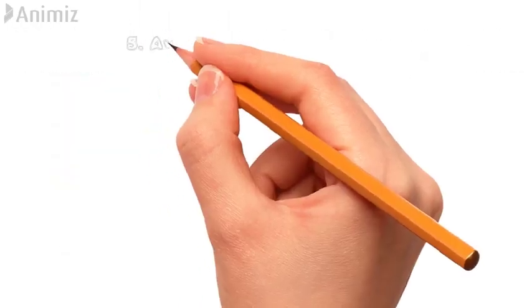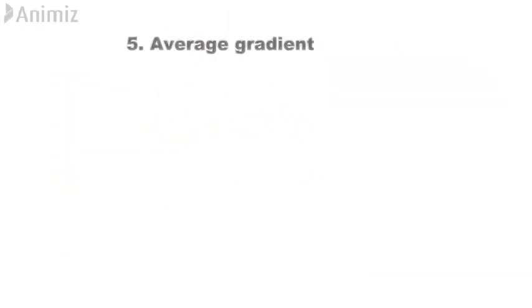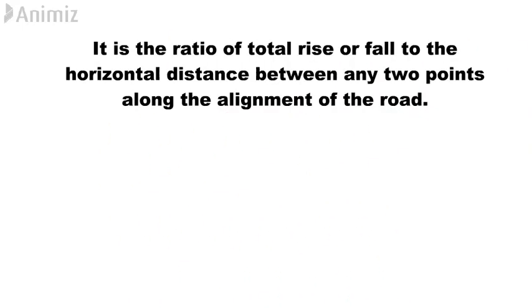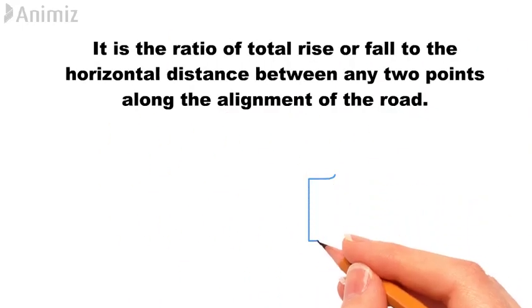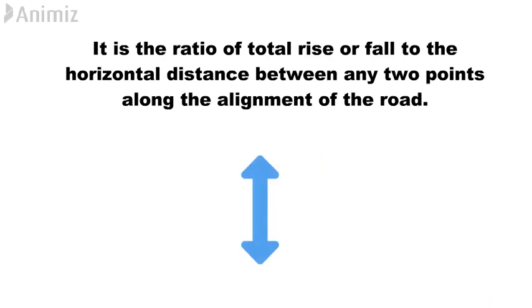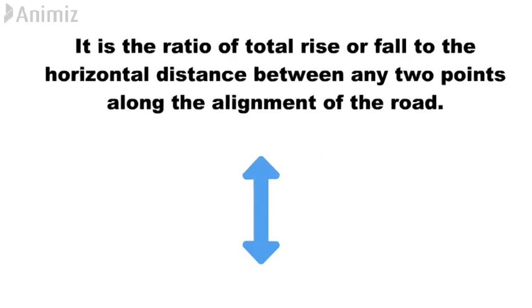5. Average gradient. It is the ratio of total rise or fall to the horizontal distance between any two points along the alignment of the road.